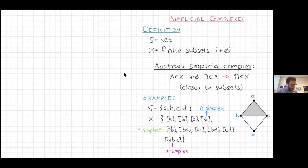You can see an example on the set of four vertices A, B, C, D. We list the simplexes — vertices A, B, C, D are zero-dimensional simplexes; then we have edges, which are one-dimensional simplexes; and in this example, there's also a two-dimensional face or triangle, which is a two-dimensional simplex. The dimension can go higher — we can have three-, four-, five-dimensional simplexes and so on.